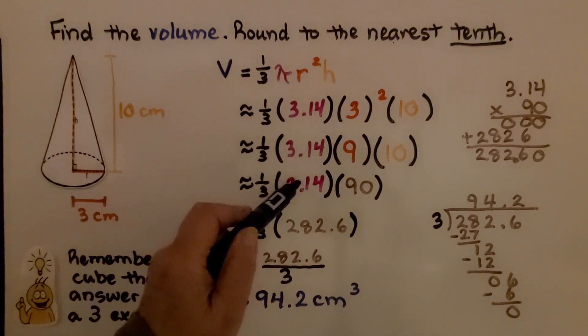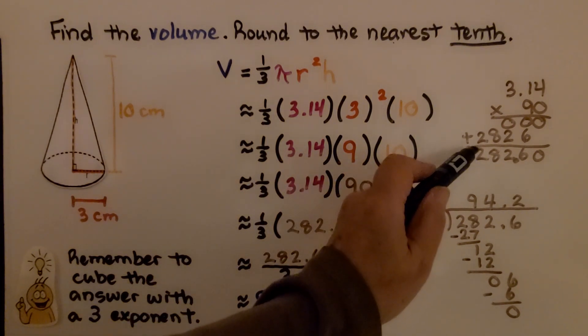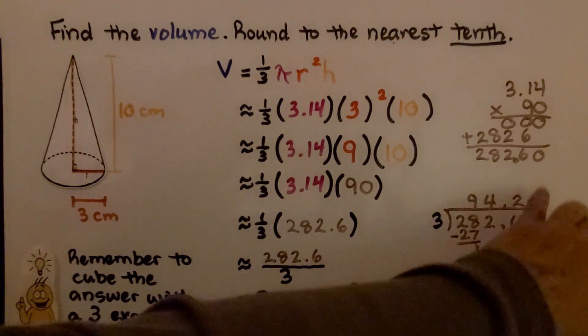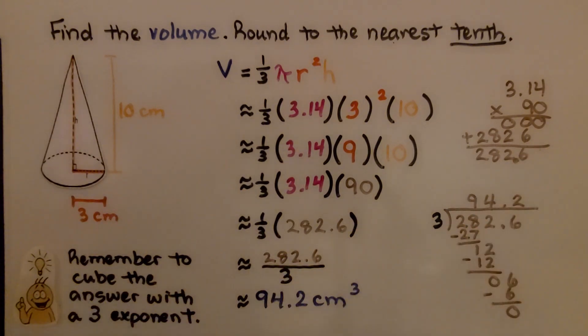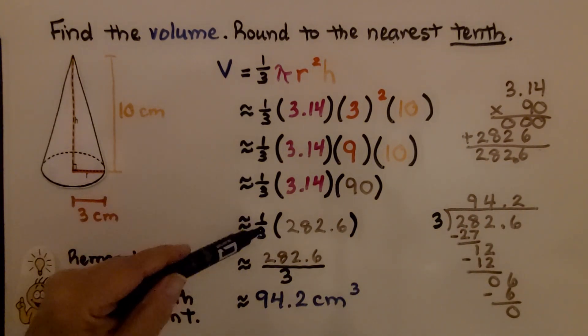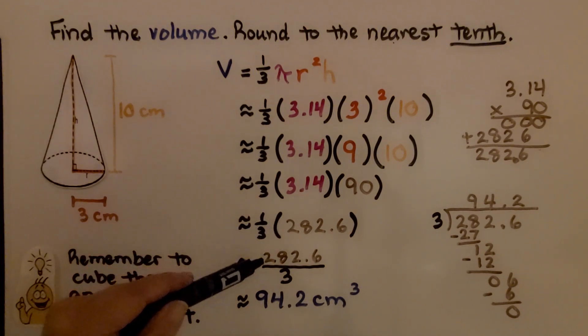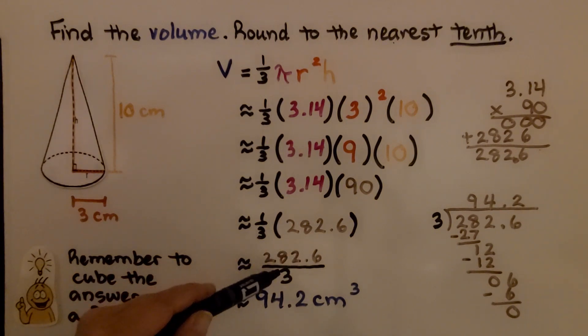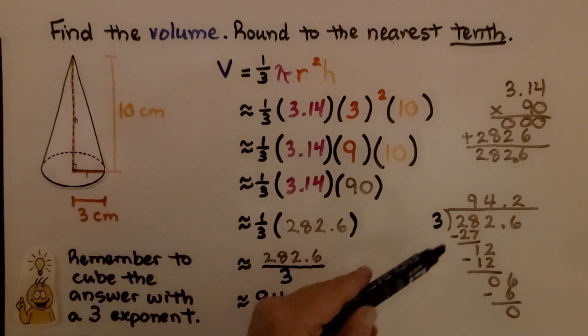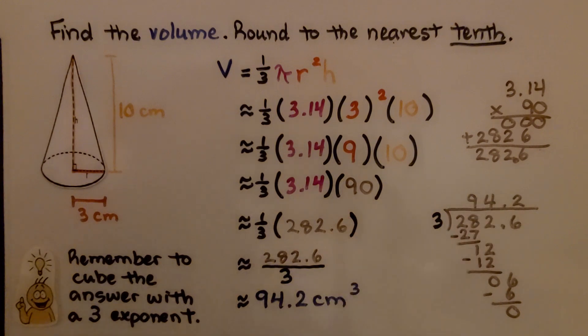Multiply 90 times 3.14. We get 282 and 6 tenths. We don't need this trailing zero. We have 282 and 6 tenths times 1 third or we can just divide 282 and 6 tenths by 3. Same answer. We get 94 and 2 tenths. We know that the volume is approximately 94 and 2 tenths centimeters cubed. Now remember to cube the answer with that little 3 exponent. Otherwise, it's not correct.